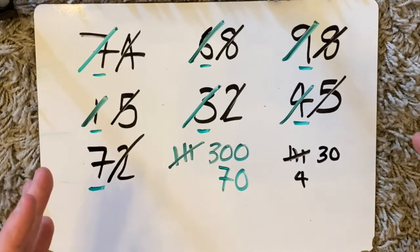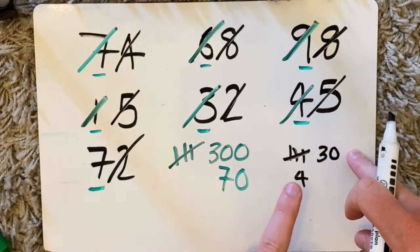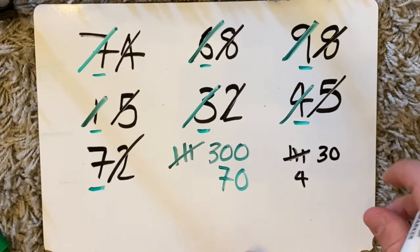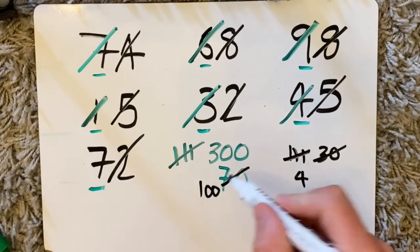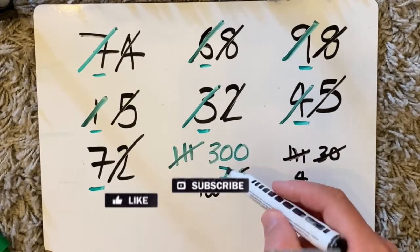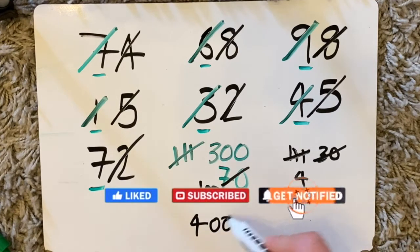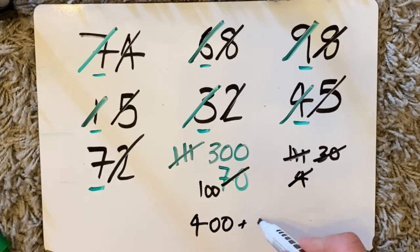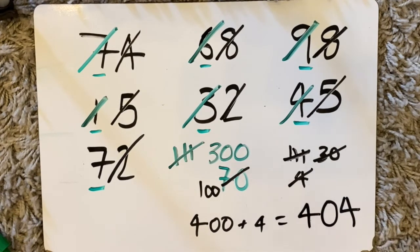So now how much easier is it to add 300, 70, 30 and 4 together? Well look, 30 and 70 makes 100. So I've got 300 plus 100 makes 400. And then I've just got my 4 here plus 4. And the answer was 404.